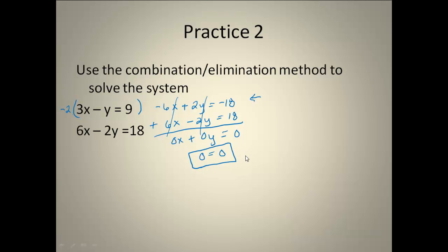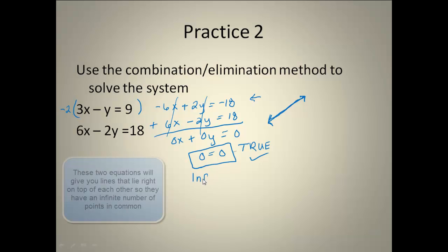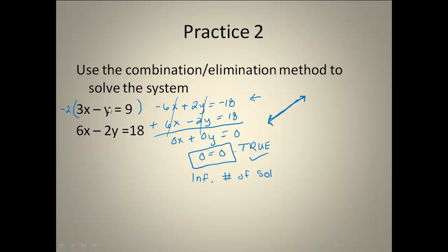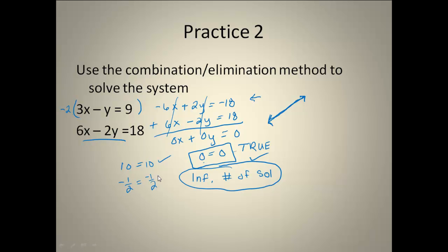What you have to look at is: is this statement always true or always false? When this happens and the statement is always true, you are going to have an infinite number of solutions. So I can pick whatever value I want for x, and when I solve it out in the top equation, I'll get my y — and that'll be the exact same pair that fits into my bottom equation. If you end up with 10 equals 10, the same thing happens, because that is always true. It could be negative one half equals negative one half. All of these lead to an infinite number of solutions, because they have no variables and the statement is true.